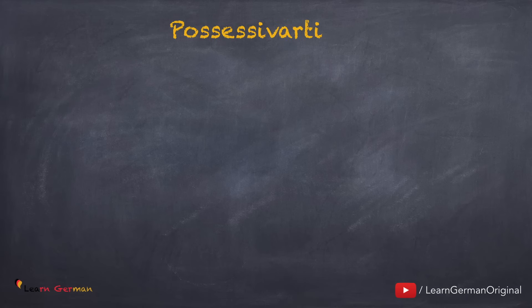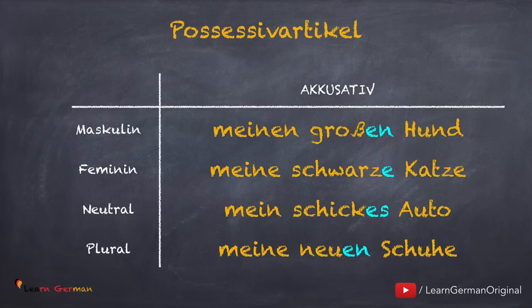Und jetzt eine Übersicht: Possessivartikel im Akkusativ. Maskulin: meinen großen Hund. Feminin: meine schwarze Katze. Neutrum: mein schickes Auto. Und Plural: meine neuen Schuhe.